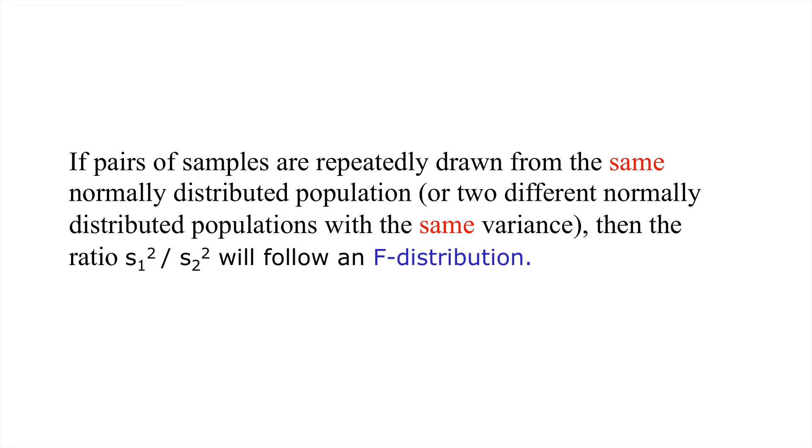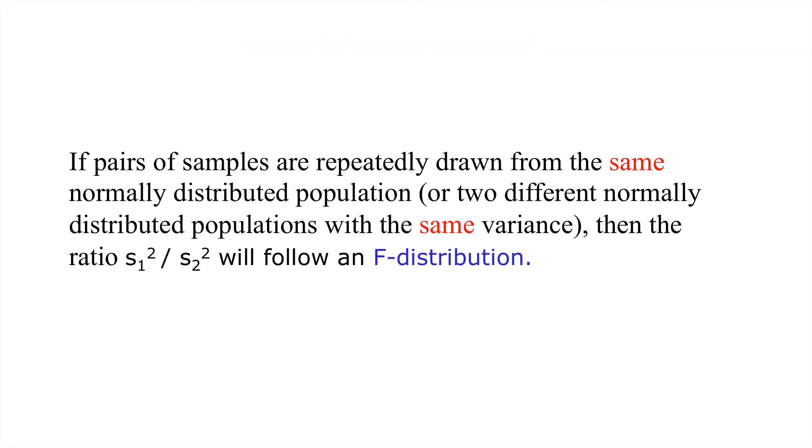Here is the defining attribute of an F distribution. If pairs of samples are repeatedly drawn from the same normally distributed population, or two different normally distributed populations with the same variance, then that ratio will follow an F distribution. So what we need is a normal distribution and repeated samples from that, that ratio of S1 squared to S2 squared should follow a theoretical distribution known as the F distribution.